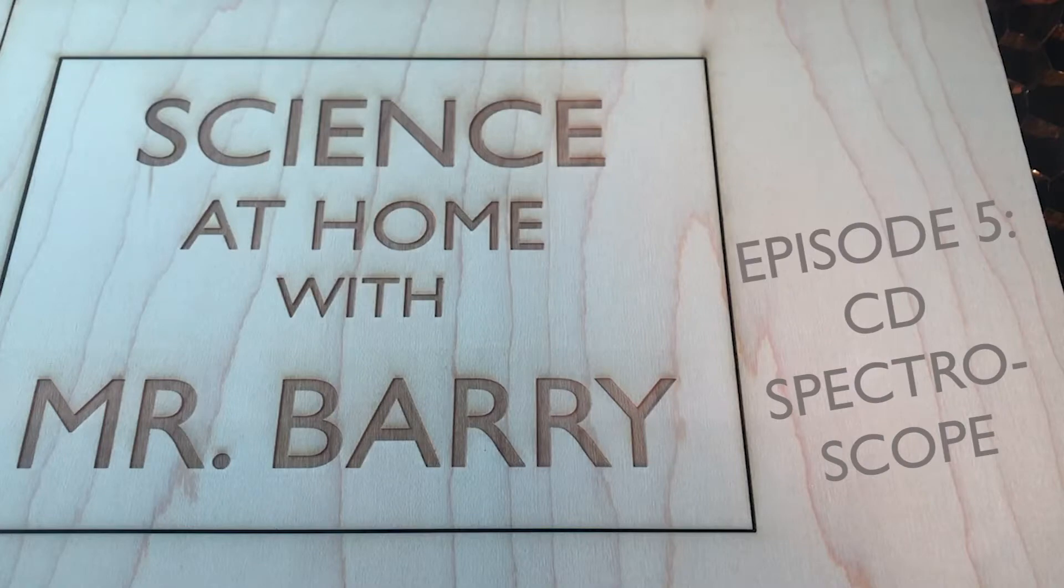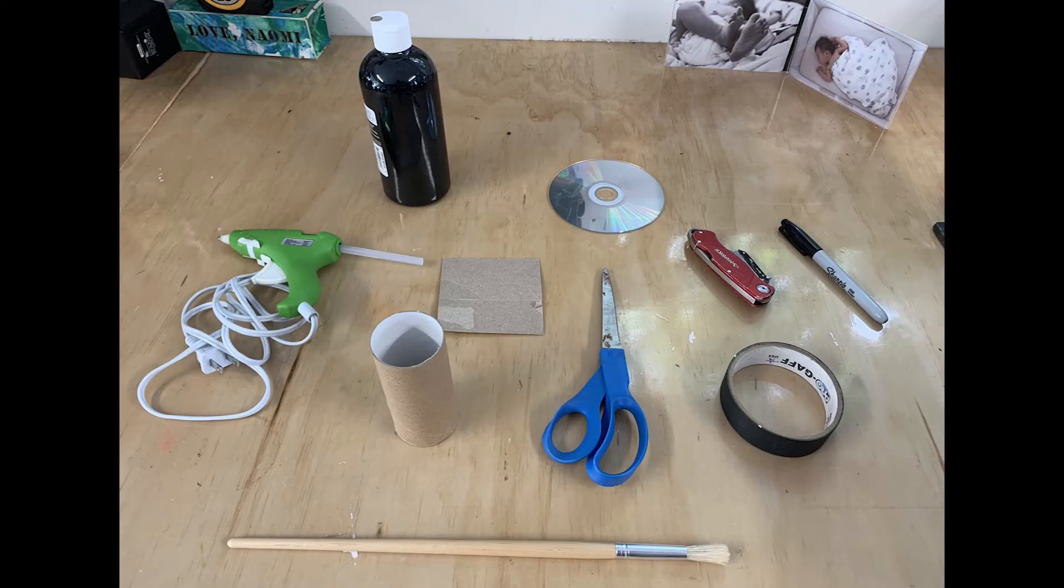Episode 5! CD Spectroscope. For the spectroscope, you're going to want an old CD, a toilet paper roll, thin piece of cardboard from a cereal box, tape, hot glue, box cutter, scissors, sharpie, and optional dark paint if you have it, and a paintbrush.